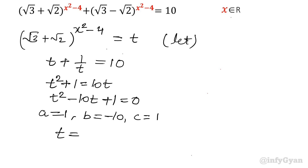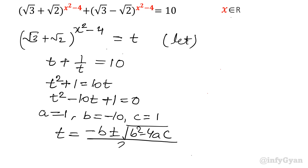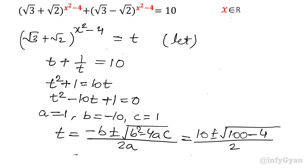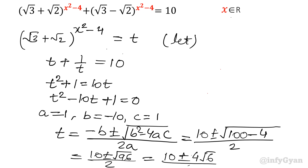So t = (-b ± √(b² - 4ac)) / 2a. Substituting the values: t = (10 ± √(100 - 4)) / 2 = (10 ± √96) / 2. Since 96 = 16 × 6, √96 = 4√6. Taking 4 outside and dividing by 2, the value of t is 5 ± 2√6.